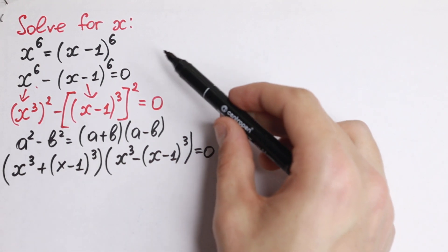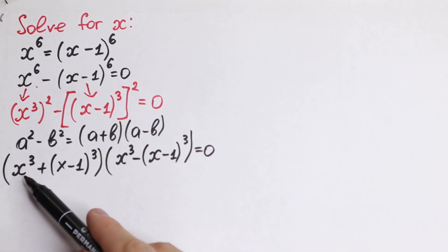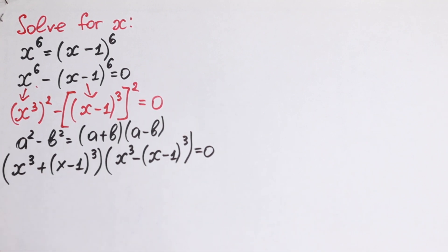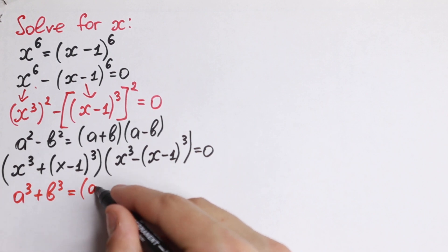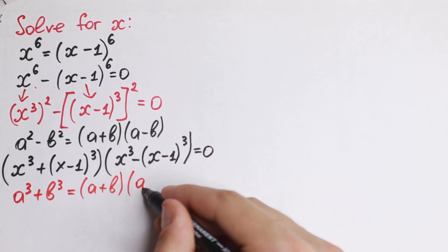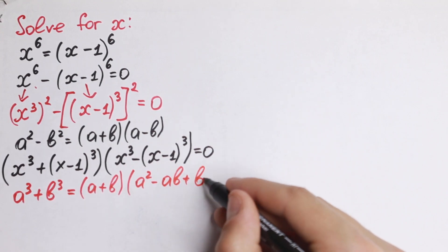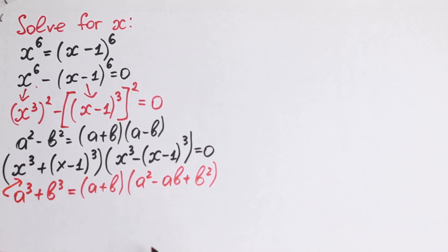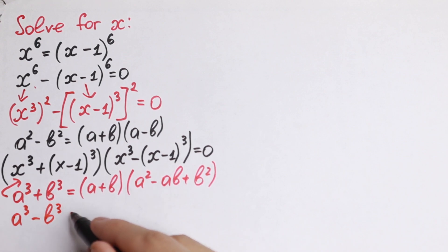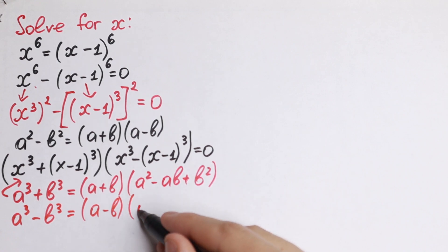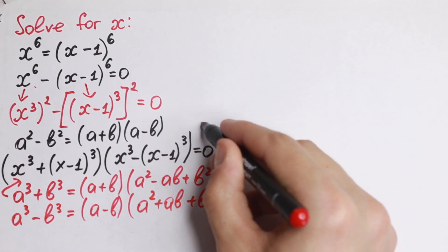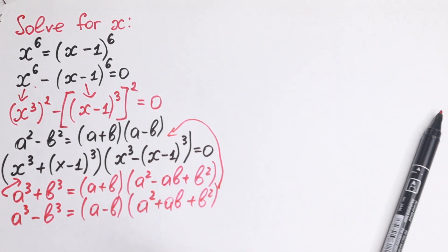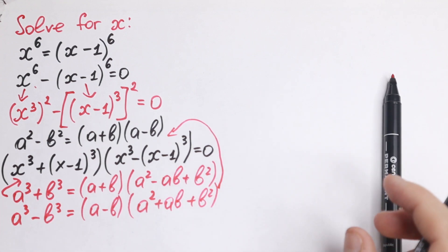We now have a sum of two cubes and a difference of two cubes, and we need to know the formulas. The sum of cubes: a cubed plus b cubed equals a plus b times a squared minus ab plus b squared. The difference of cubes: a cubed minus b cubed equals a minus b times a squared plus ab plus b squared. We apply each formula to the corresponding factor.